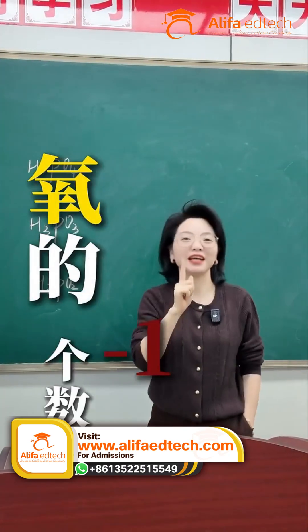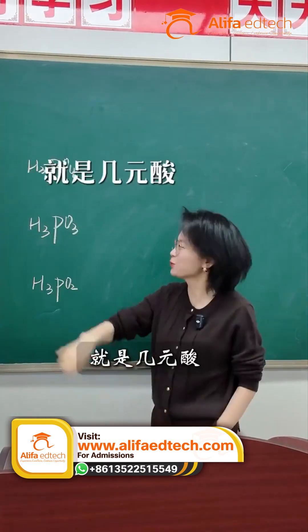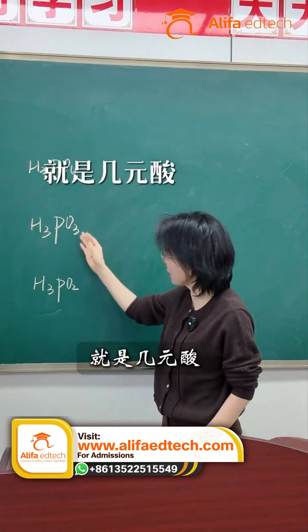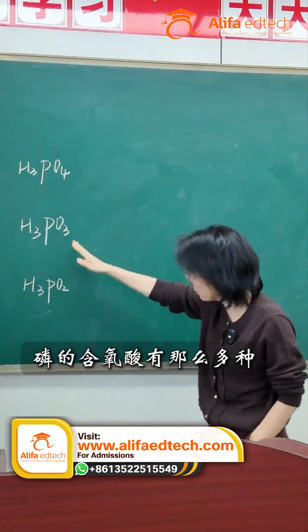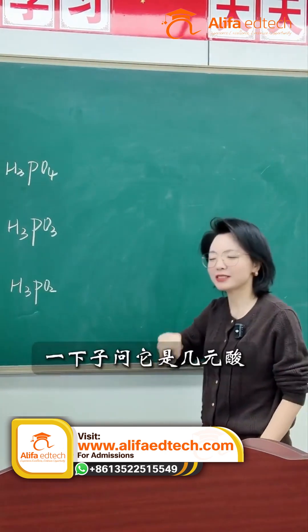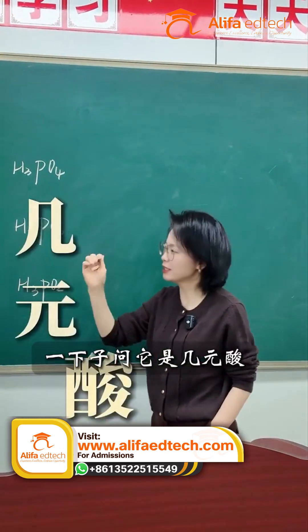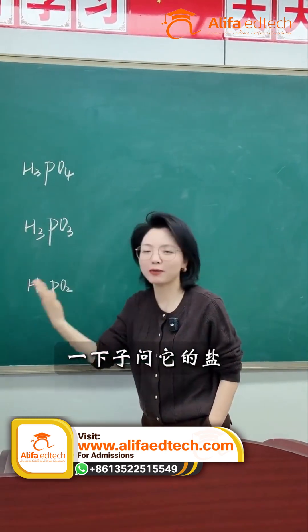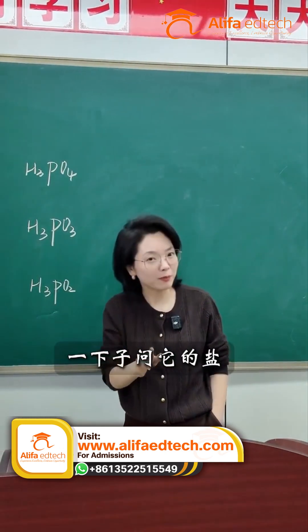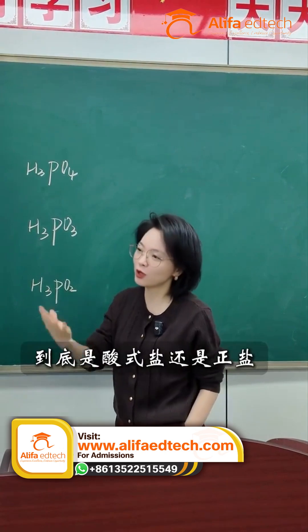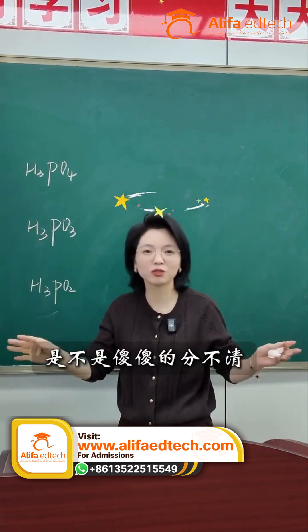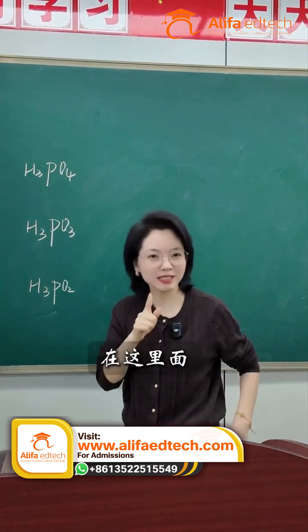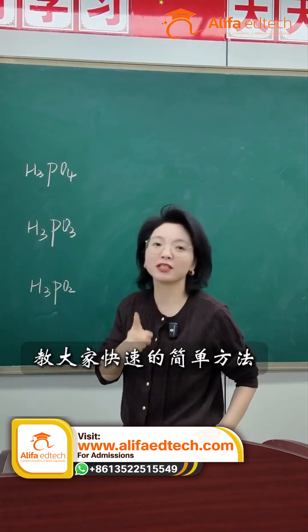The number of oxygen atoms minus 1 gives you the basicity of the acid. There are so many different phosphorous oxyacids. If you're suddenly asked about their basicity or about their salts — whether they're acid salts or normal salts — do you find it all a bit confusing?